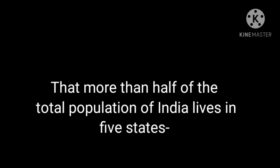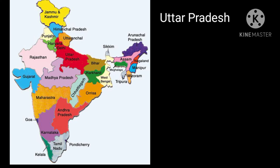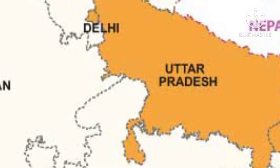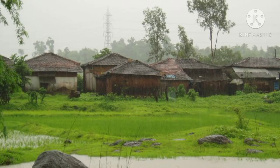More than half of the total population of India lives in five states: Uttar Pradesh, Maharashtra, Bihar, West Bengal, and Andhra Pradesh. Uttar Pradesh is the most populated state of India, and Sikkim is the least populated state. India is the land of villages — out of every four Indians, three live in villages.